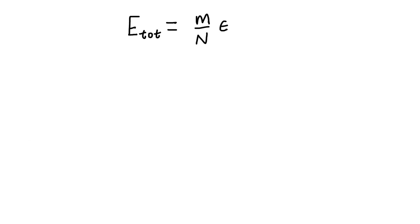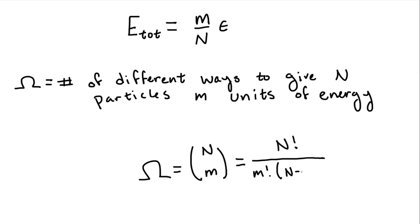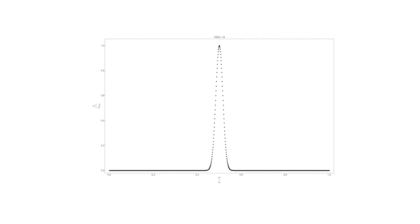So, say we have m units of energy in our system. The multiplicity will then be given by the total number of ways that these m units can be distributed among our n particles, which we can write in a nice compact form using the binomial coefficient n choose m. Now, we can just plot the values of the multiplicity for all possible values of m and different total numbers of particles and see what happens.